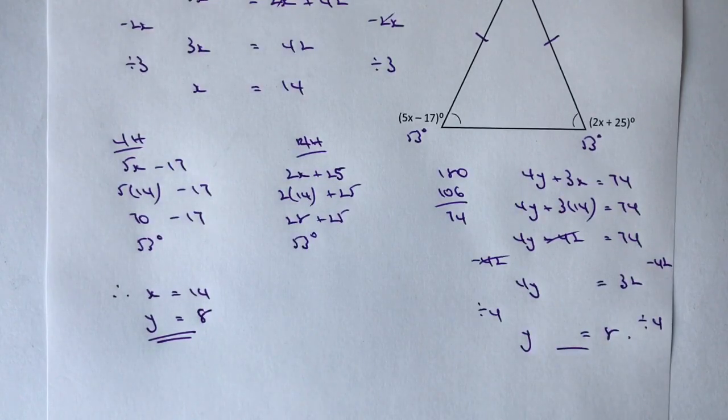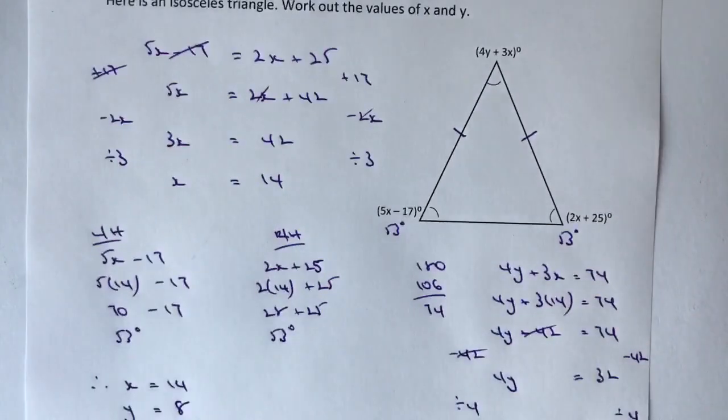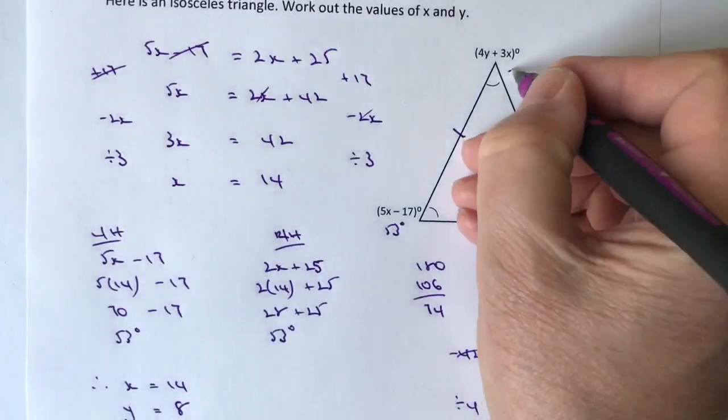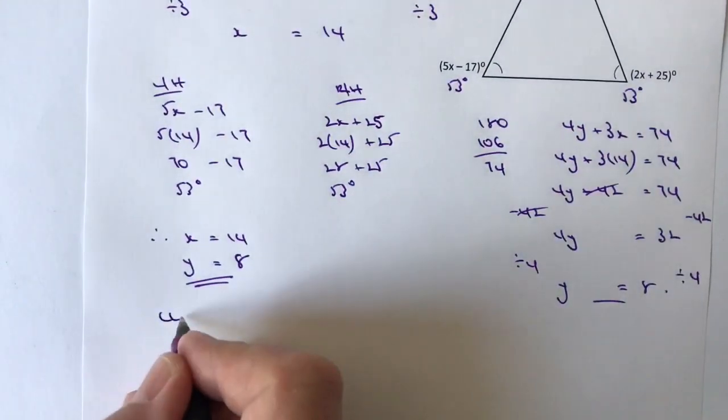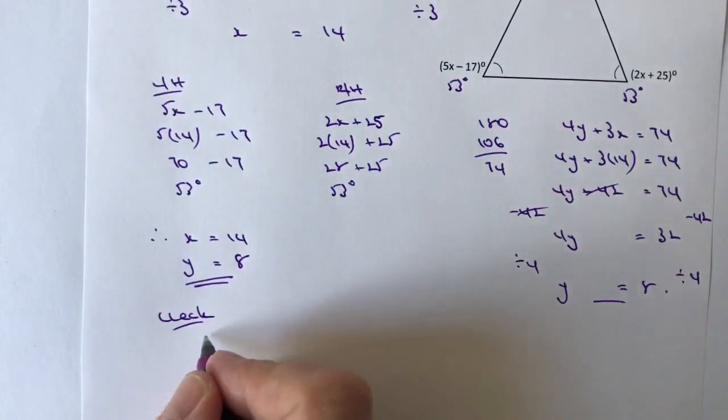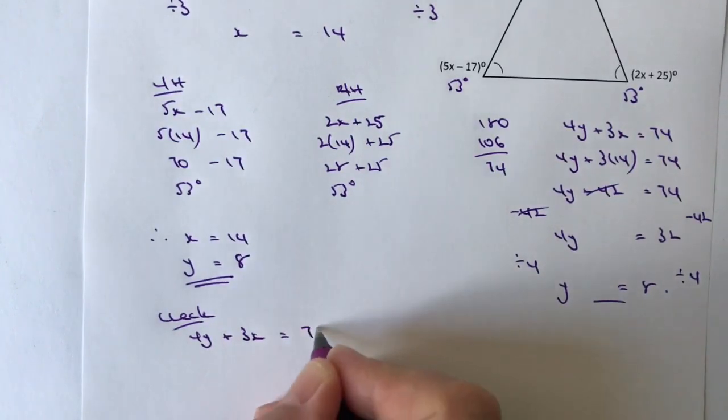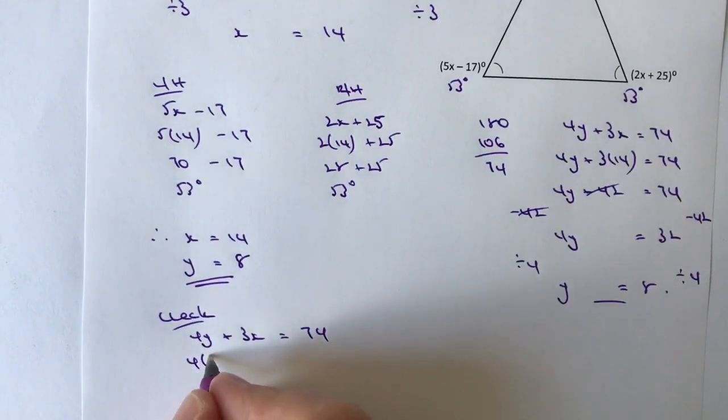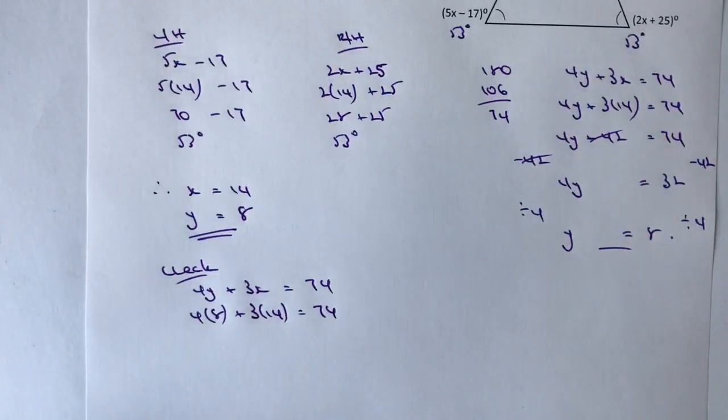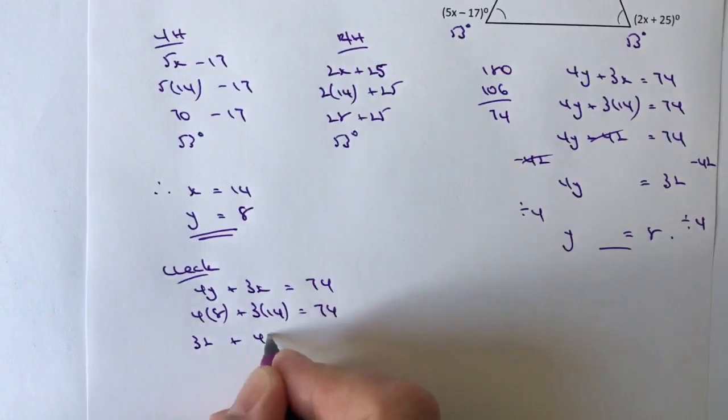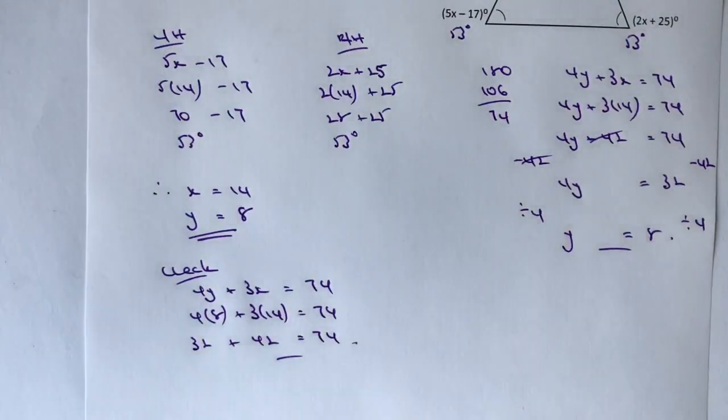To check this, I'll take my value of x and y and plug them into the top angle. We know the top angle is 74 degrees, so my check is that 4y plus 3x equals 74. So 4 times 8 plus 3 times 14 must equal 74. If I expand that out, I get 32 plus 42 equals 74. Therefore I must be correct that x is 14 and y is 8.